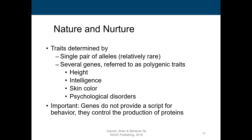Genetics is very complicated, and a single pair of alleles is relatively rare. Most of the time you have several genes — we refer to that as polygenic. Height, intelligence, skin color, and psychological disorders are all influenced by multiple genes. Genes do not provide a direct script for behavior, but they do control the production of proteins. Genes influence how we behave, but they're not giving us an exact script. Some genes turn off and some genes turn on, and this indirectly affects our behavior.